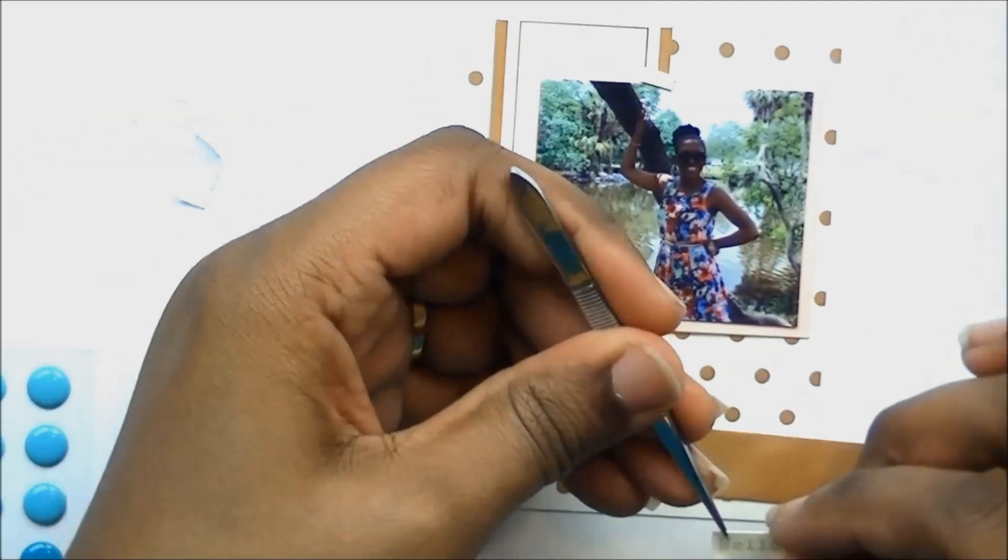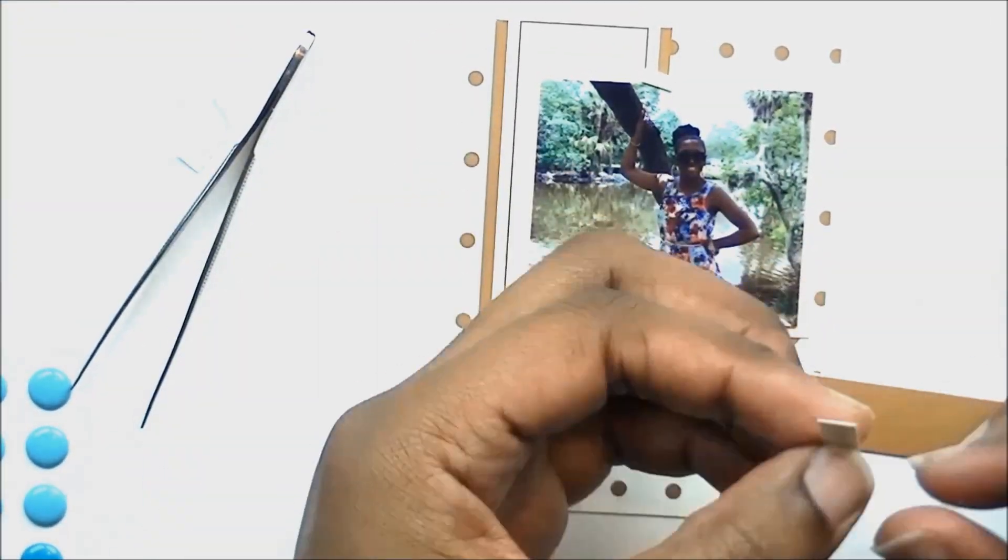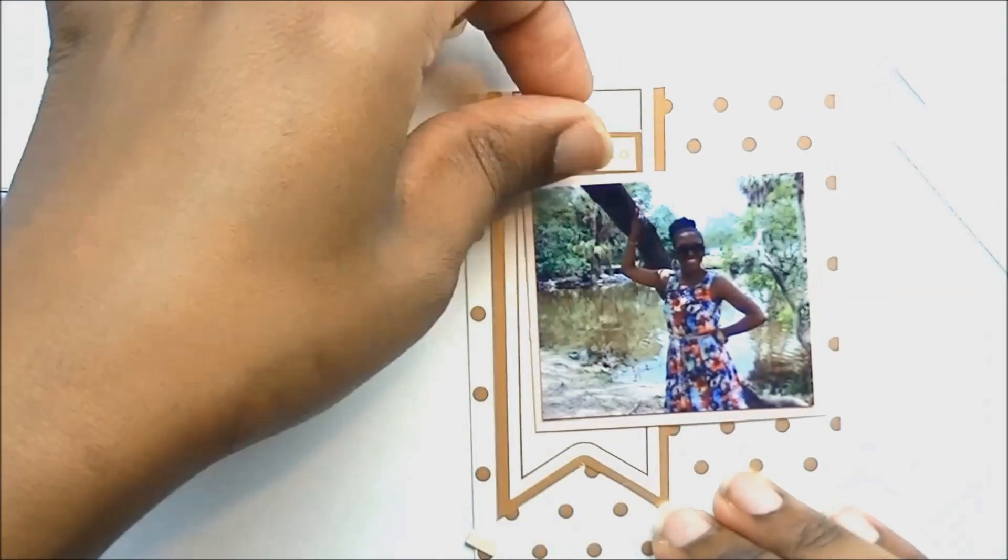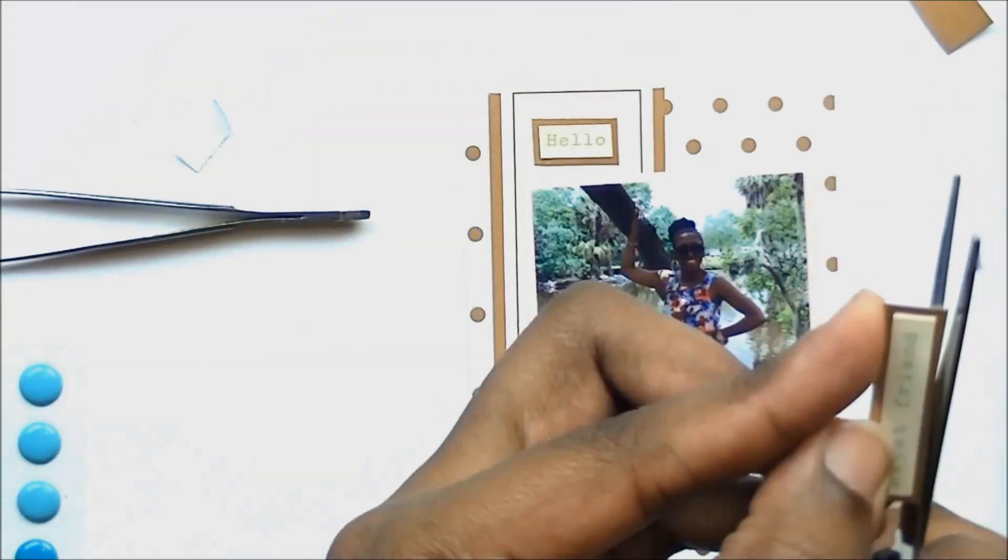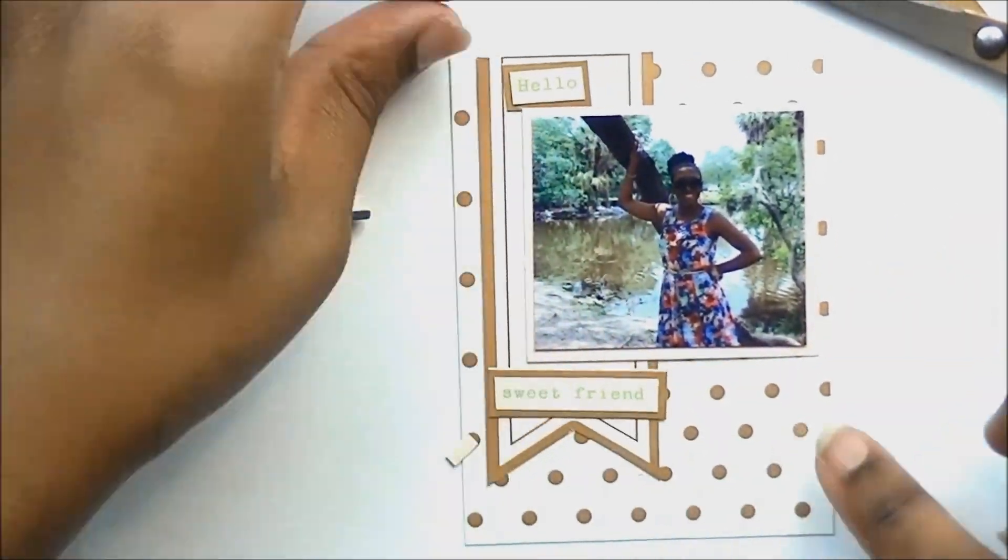This little word label says hello sweet friend, and I'm just cutting the words apart, cutting the hello off, and then I'll layer it on this little piece of gold just to help them stand out.